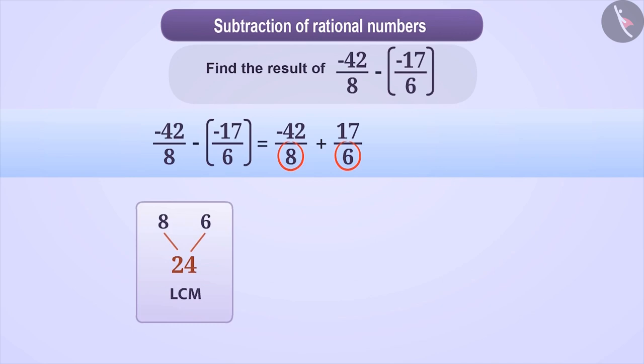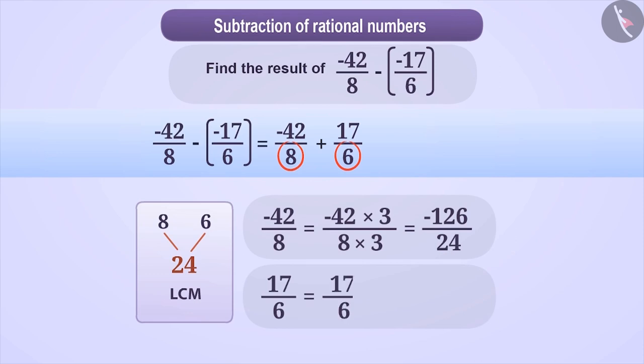So we will turn denominators of both rational numbers into 24. For this, we multiply the numerator and the denominator of -42/8 by 3 and the numerator and denominator of 17/6 by 4. This will make the question -126/24 + 68/24.